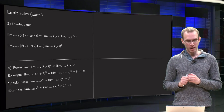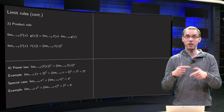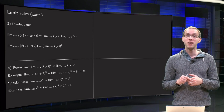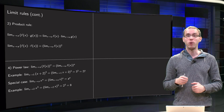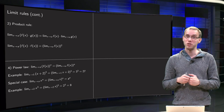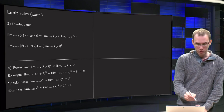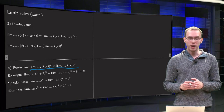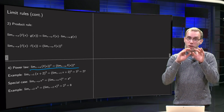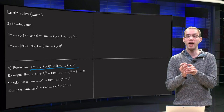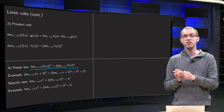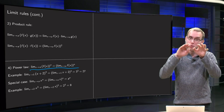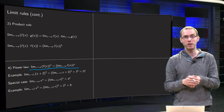We can generalize that and do the same trick n times — apply the product rule n times to the same function f(x) — and then we get what is called the power law: the limit as x approaches a of a function to the power n equals the limit of f(x), taken first, to the power n. So take the limit first and the power next.